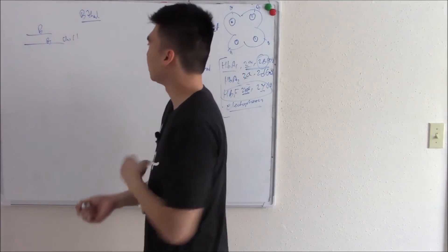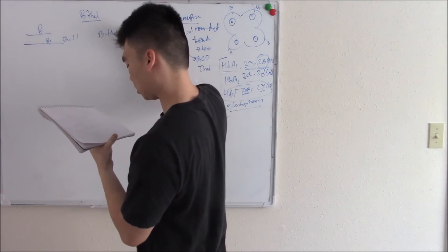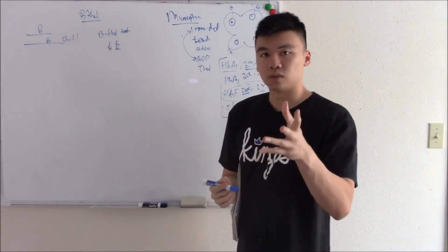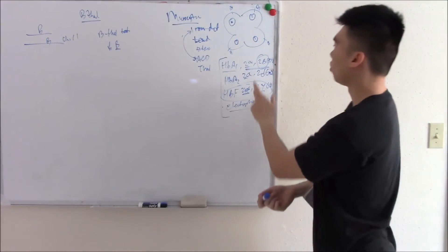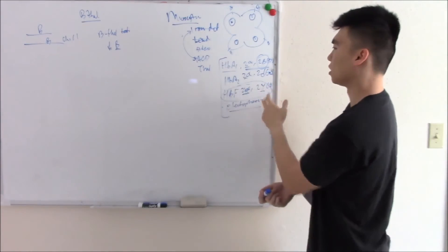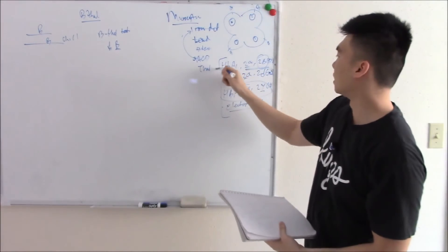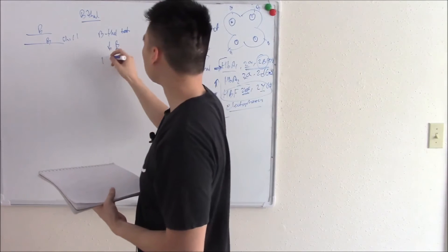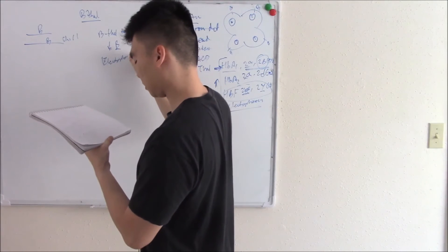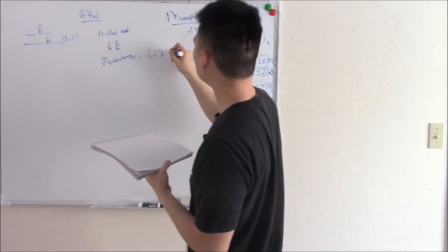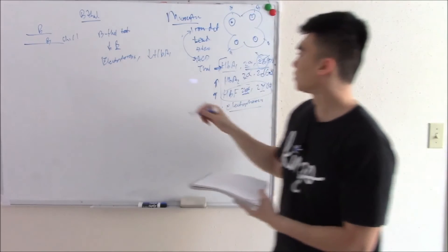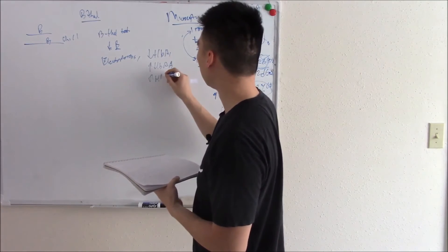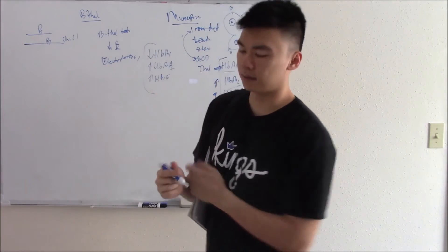If you delete one, we call that beta thalassemia trait or beta thal trait. There's a slight decrease in beta production. General rule of thumb: if there's a slight decrease in beta production, alpha will increase, delta will increase, gamma will increase to take its place. So you're going to have a decrease in this because you don't have beta, but you're going to have an increase in everything else because those don't need beta. So on electrophoresis, you're going to see decrease HbA1 because you don't have any beta chains. And you're going to see increase in everything else.